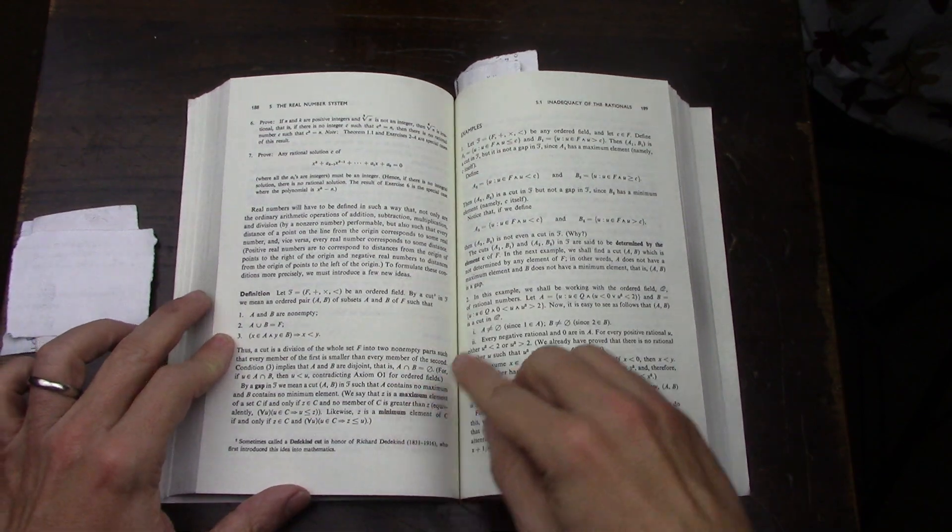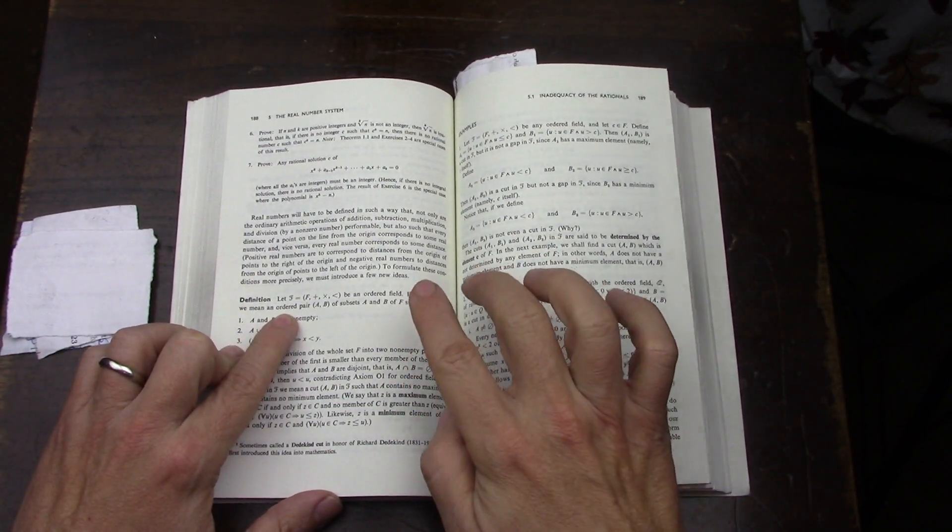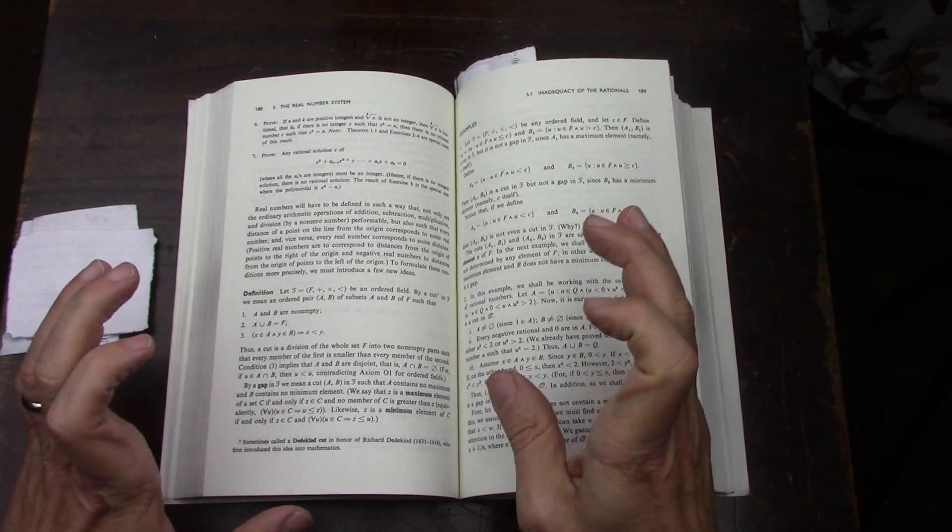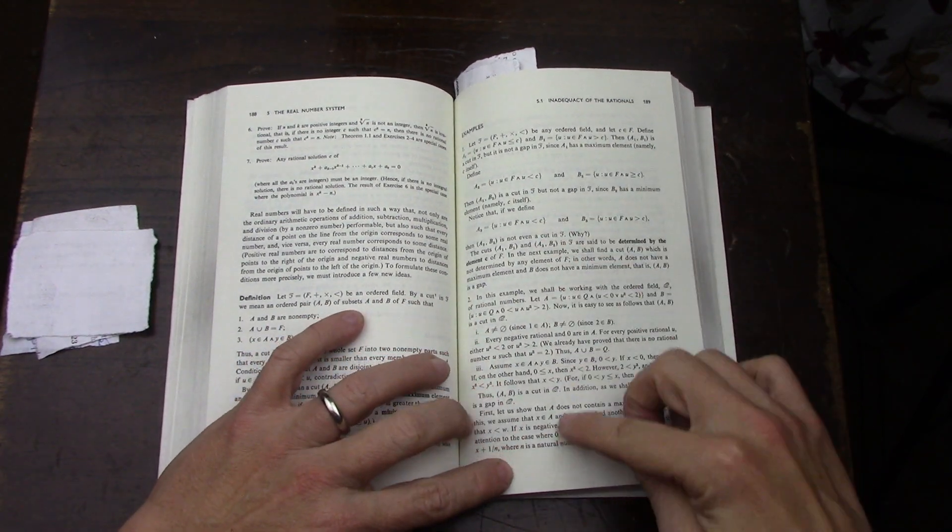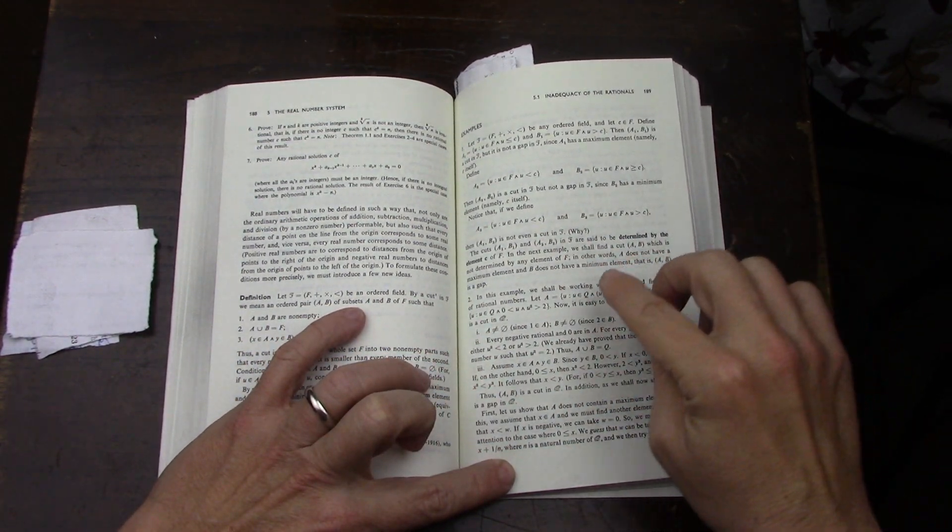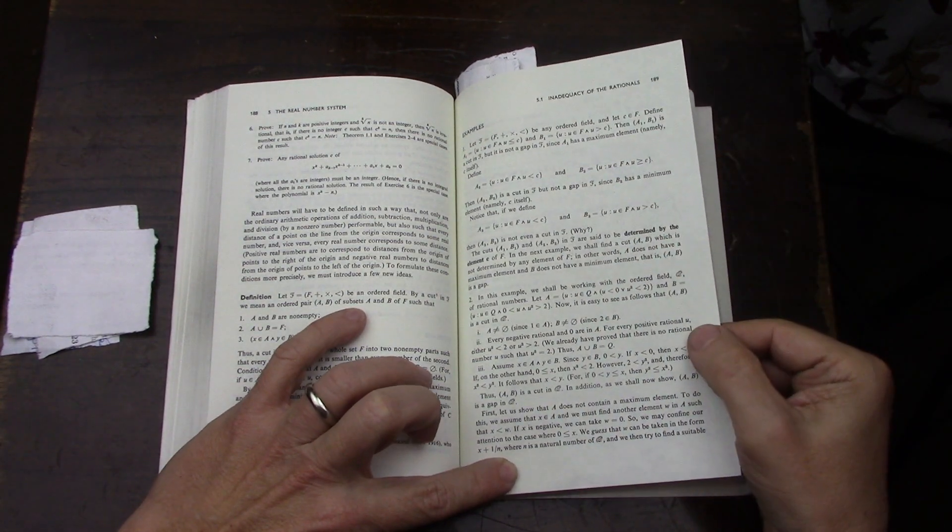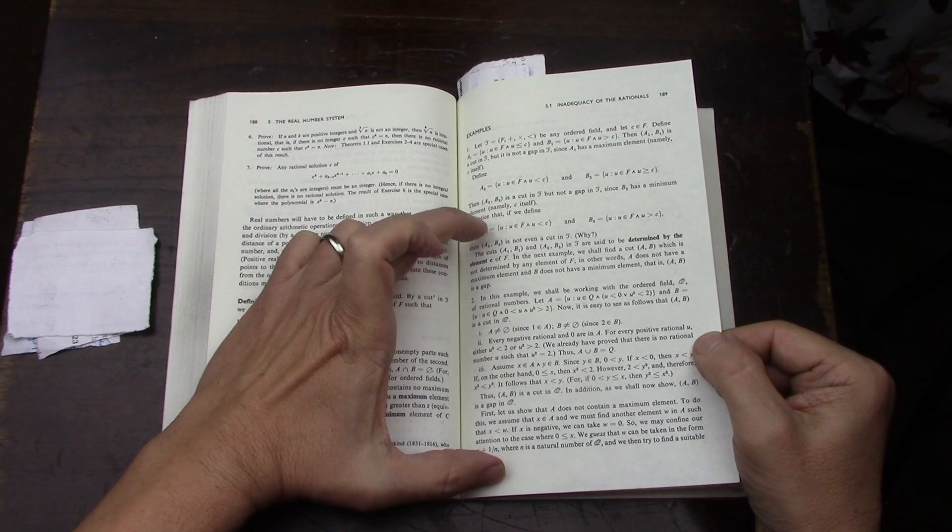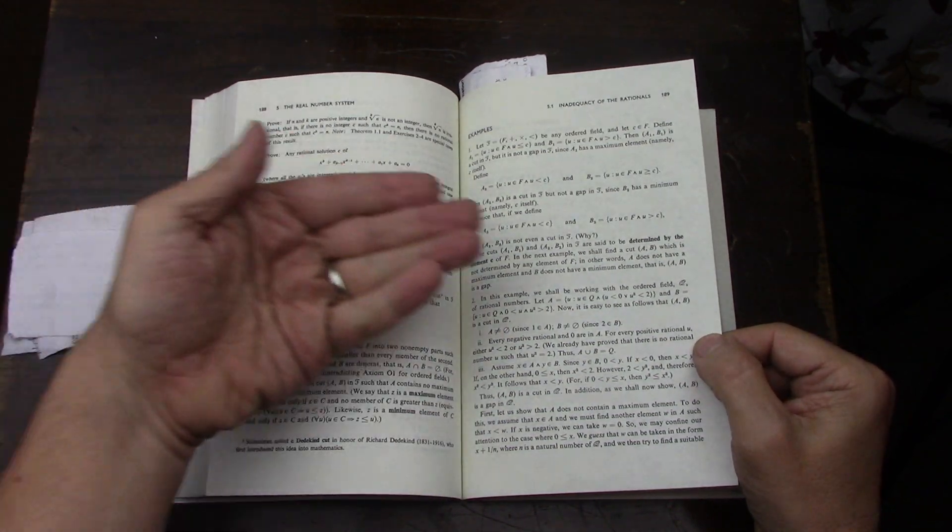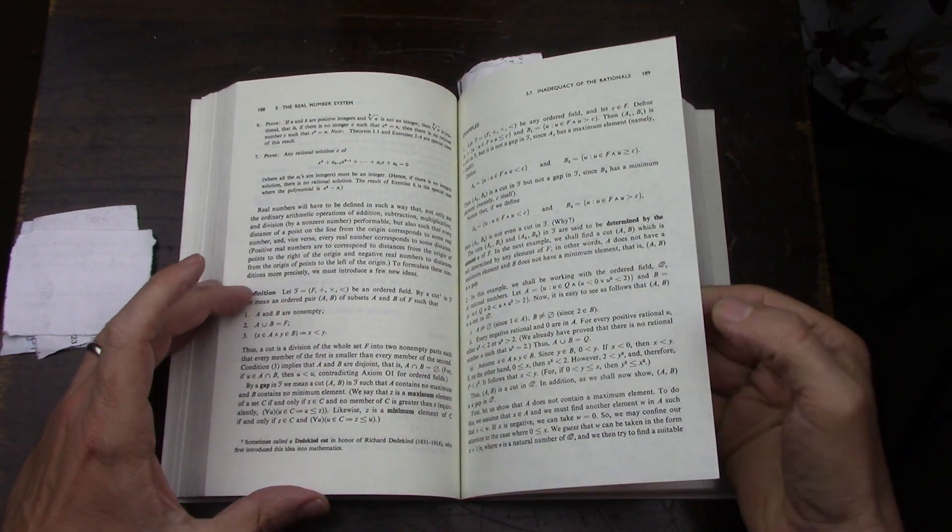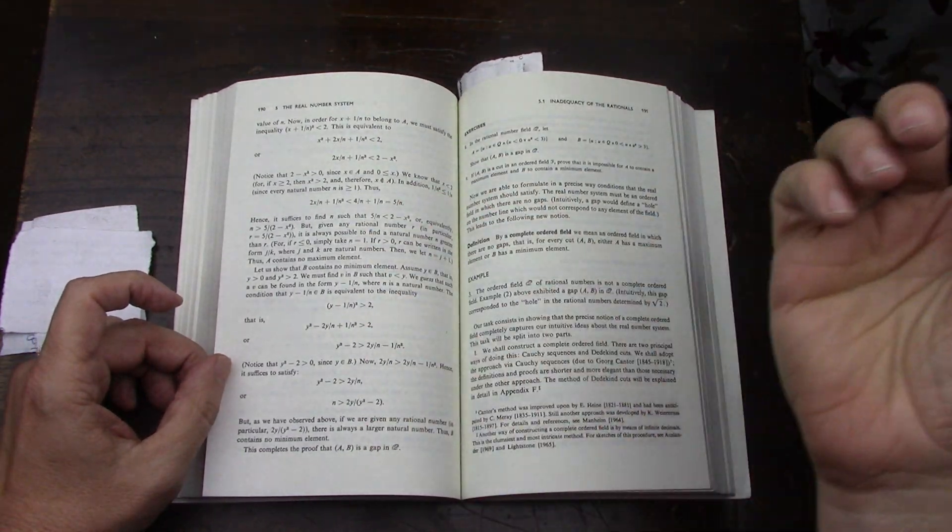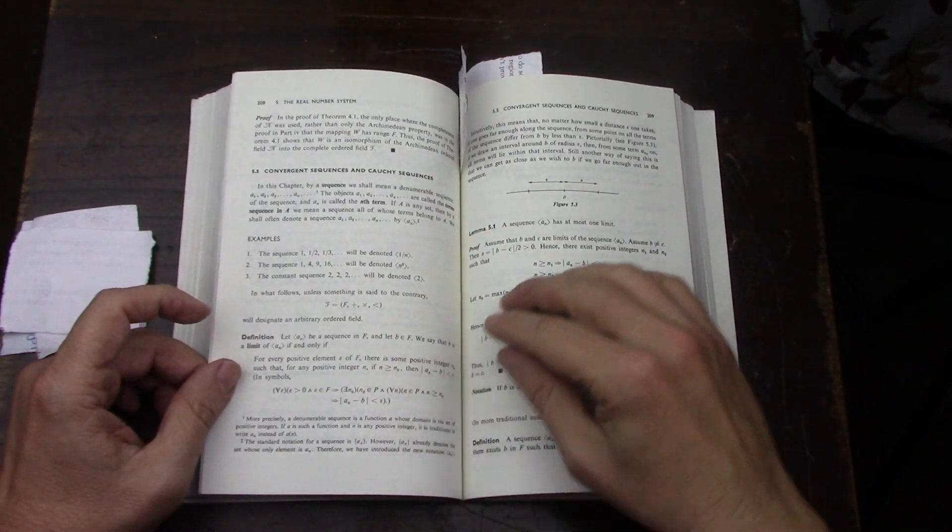Then also, cuts. How cuts work out, Dedekind cuts. Finally, I think I understand them. And there's a really beautiful proof in here of the gap in the rationals. And actually, this maps pretty well to a proof that it's done in Bartle and Sherbert coming at it from a completely different angle. So, very nice.